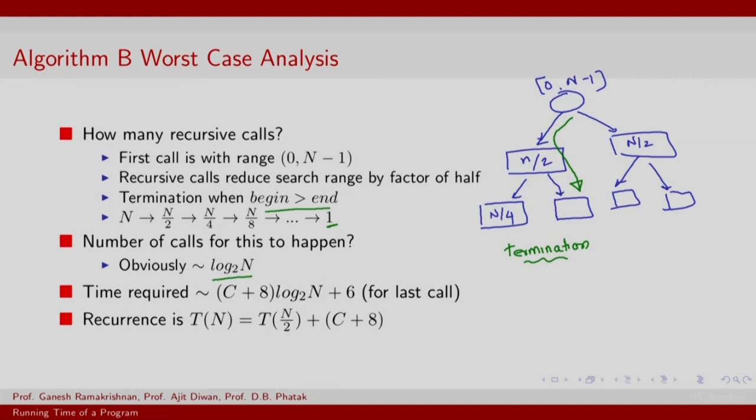So the time required is C plus 8 into log to the base 2 of n. This is for all the calls except the last one. The last case you will have a cost of 6 that really corresponds to the leaf. So our recurrence relation is T n equals T n by 2 plus 8. How do you solve this? In a following lecture we will talk of the master's theorem, and you can solve this using the master's theorem. Basically the master's theorem gives you a template for solving recurrence relations in the asymptotic case, and when I say asymptotic case I mean for reasonably large values of n.